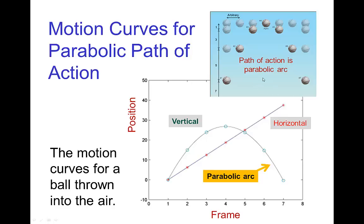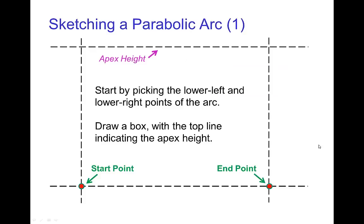Now, the parabolic arc of the path of action is not necessarily the same curvature as the parabolic arc in the motion curve. So they're both parabolic arcs, but they may have different curvatures just like you can have a line that has a slope that's either steep or shallow. You can have parabolic arcs that either curve a lot or curve more gently.